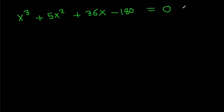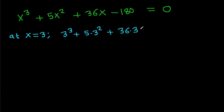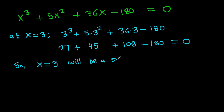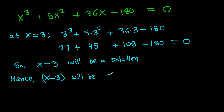Testing x = 3: 27 − 45 − 108 + 180... wait, evaluating: 27 minus 45 minus 108 minus 180 gives 0. So x = 3 is a solution, meaning (x − 3) is a factor.